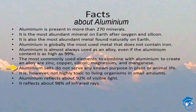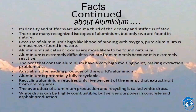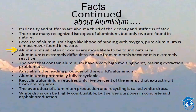Aluminium salts do not serve any known purpose in plant and animal life, and aluminium is not highly toxic to living organisms in small amounts. It reflects about 92% of visible light and about 98% of infrared rays. Aluminium's density and stiffness are about a third of the density and stiffness of steel. There are many recognized isotopes of aluminium, but only two are found in nature. Because of aluminium's high likelihood of binding with oxygen, pure aluminium is almost never found in nature.